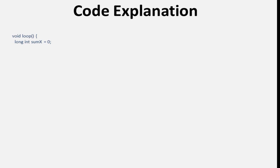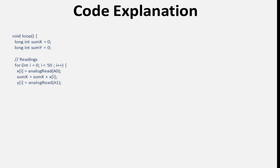This is the loop function, which runs repeatedly after setup. It initializes variables sum_x and sum_y to store the sum of readings from the x and y axis of the joystick. Inside a loop, it reads analog values from pins A0 and A1 connected to the x and y axis respectively, 50 times, and calculates the sum. This then calculates the average values of those analog readings.